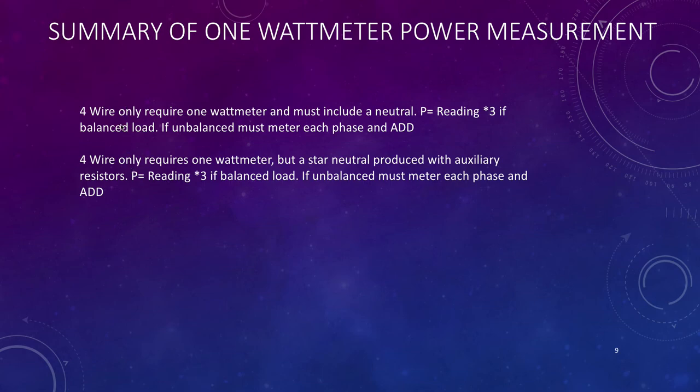So there you have it. To summarize, four wire only requires one wattmeter and must include a neutral. And power is the power reading multiplied by three for a balanced load. If it's unbalanced you've got to measure in each of the three phases and add them up. For a three wire, requires only one wattmeter but a star neutral is produced with auxiliary resistors. So the power reading times three for a balanced load. If it's unbalanced you've got to measure each of the phases again and add them up.